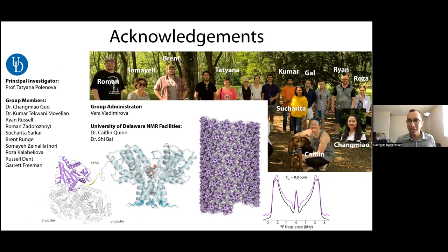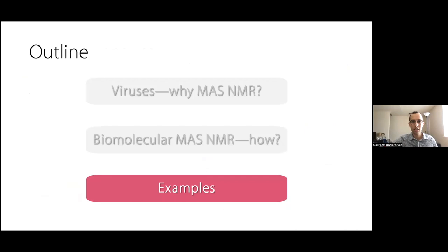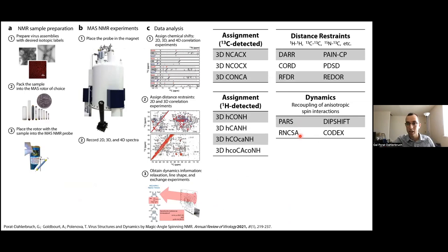Through anisotropic interactions, you can mostly see nanosecond to millisecond dynamics. Experiments like DIPSHIFT, REDOR, and RCC can be used to look at dynamics on the millisecond to nanosecond timescale. CODEX can be used to look at millisecond to second dynamics, and of course relaxation rates T1, T2, and T1-rho can address faster and slower dynamics. So that covers quite a wide range of dynamics.